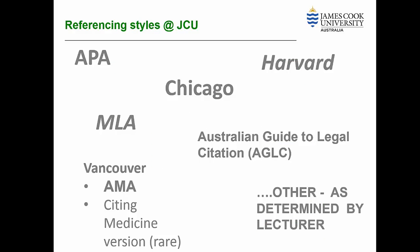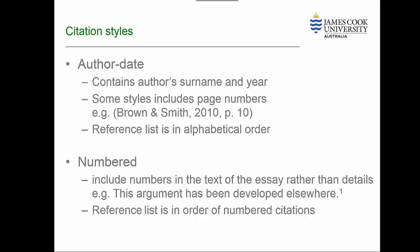There are many different ways to reference. Most referencing styles fall into one of two categories, either author-date or numbered. Different disciplines at JCU have their own preferred referencing styles, and if you are not sure which one you should be using, ask your lecturer and check your subject outline.